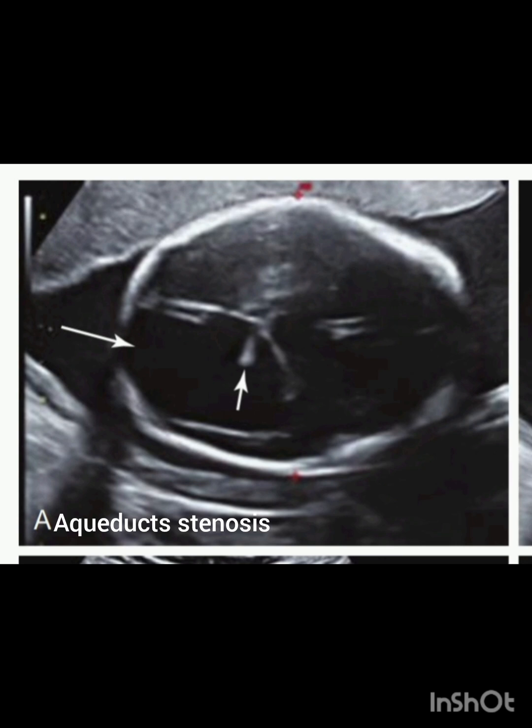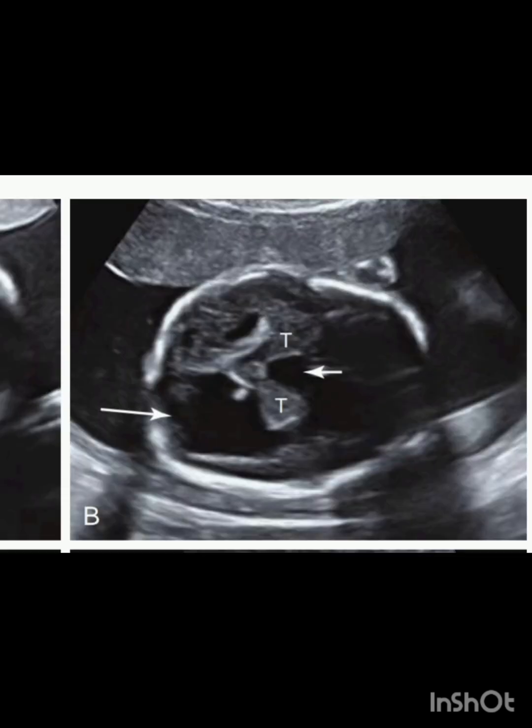In this axial image you can see severe hydrocephalus with a dangling diminutive choroid plexus indicated by the short arrow; the severe hydrocephalus is indicated by the long arrow. In this next axial image you can see the dilated third ventricle indicated by the short arrow, causing splaying of the thalami indicated by the 'T'. Also seen is the enlarged lateral ventricle.